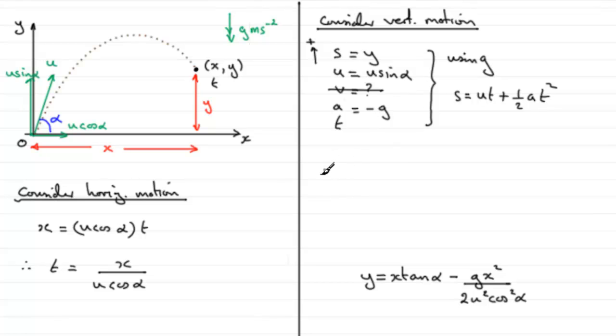So what do we have? Well we have that therefore for S we've got Y, so we've got Y equals U, U is U sine alpha, so we've got U sine alpha in brackets times T. T we know is X over U cos alpha, so X over U cos alpha. Plus a half times minus G, so minus G over 2, times T squared, and T is X over U cos alpha, and that is all squared.